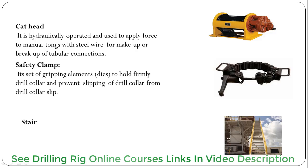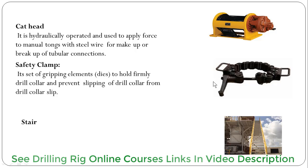Safety clamp. It is a set of gripping elements used to hold firmly a drill collar and prevent it from slipping out of the drill collar slip. It can also be used for drill pipe while running in hole, especially with weight subs or any other sensitive equipment when the string weight is very light and we need to make up and stand the safety clamp until we have enough weight.